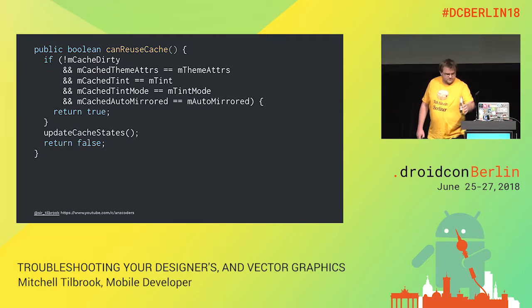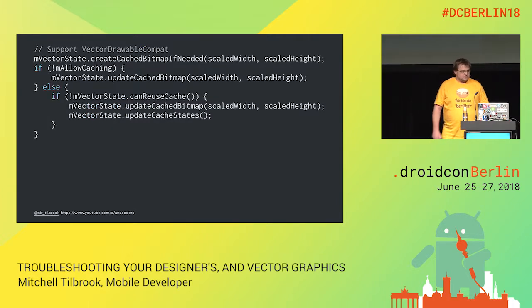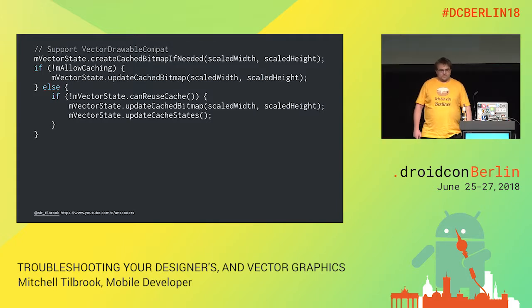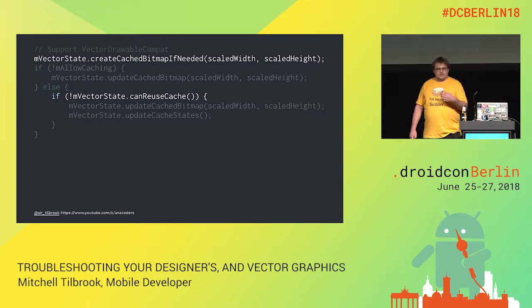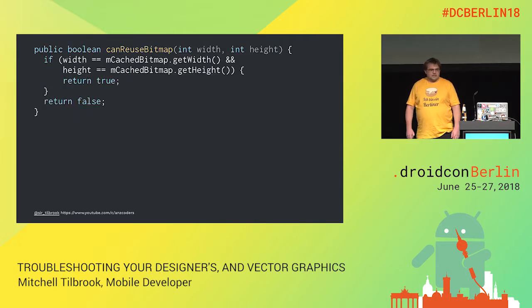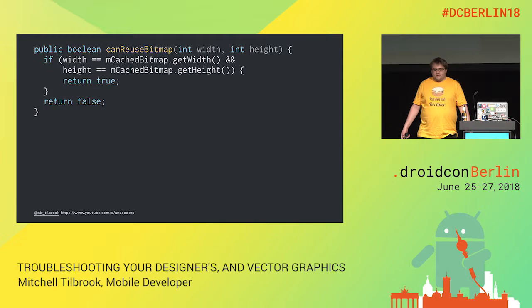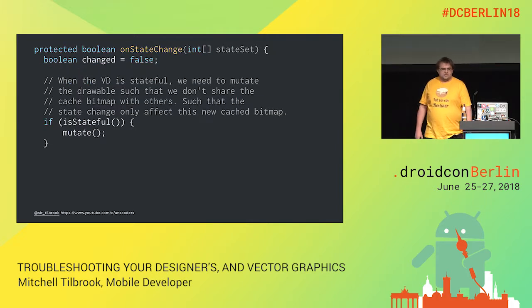It turns out there are actually a few more criteria for being able to reuse a cache than what the Google documentation says. If you go through the vector drawable class, you'll find a lot of comments in there which aren't mentioned anywhere in the documentation. The support vector drawable is fairly similar, but it's a nice class to dig into because it has to emulate a bunch of the native functionality, so we can get a better idea about what's happening underneath the hood. Looking at createCacheBitmap if needed, we can see there is another parameter checking that the height and width are the same — so we've got two levels of cache here.